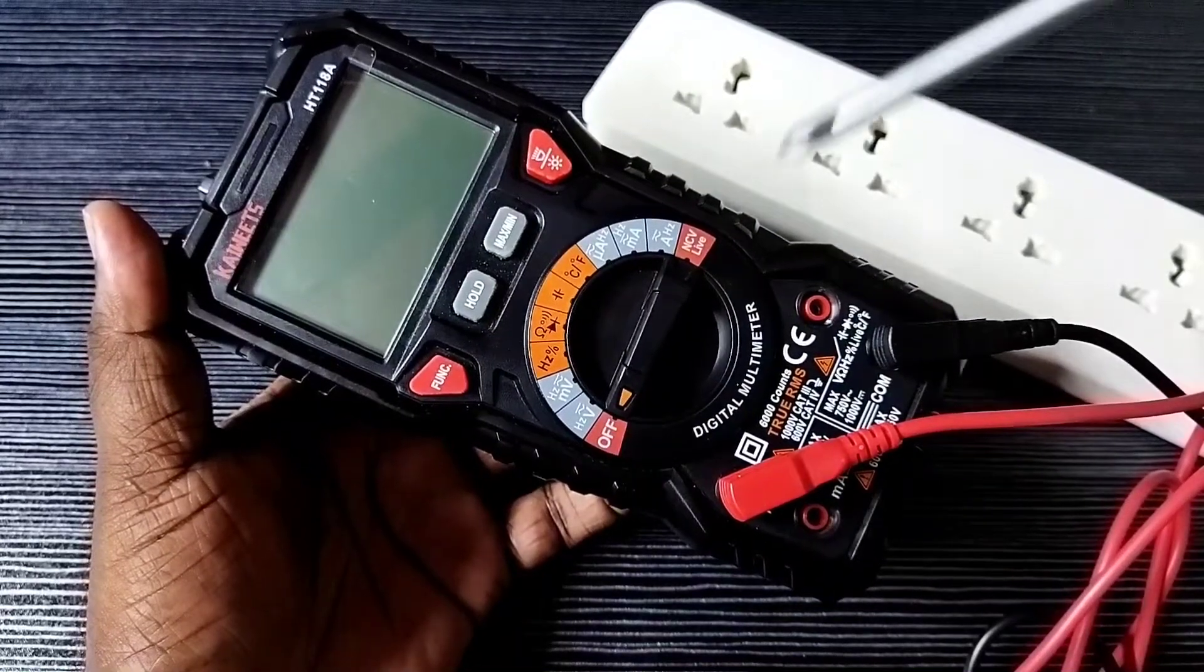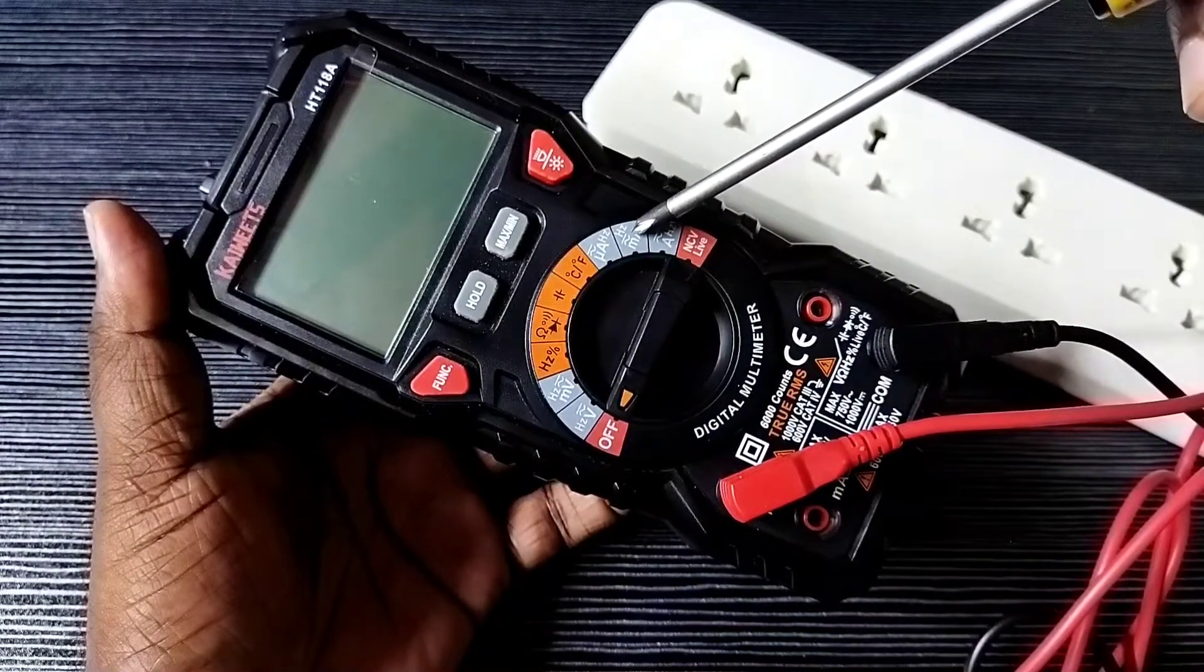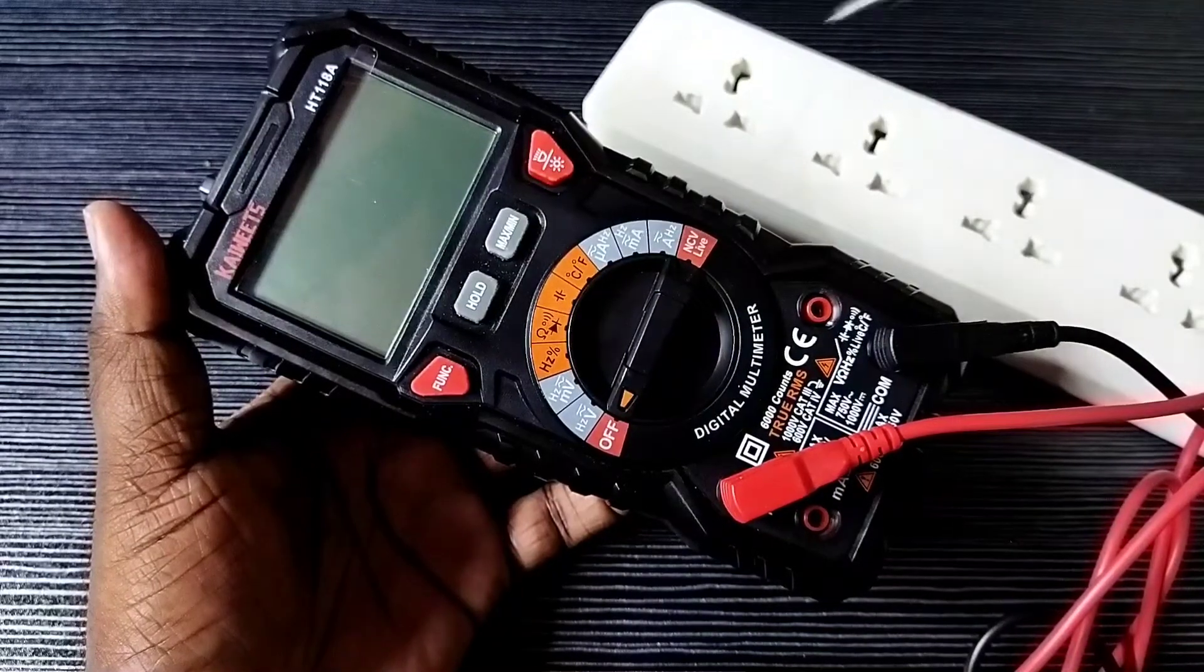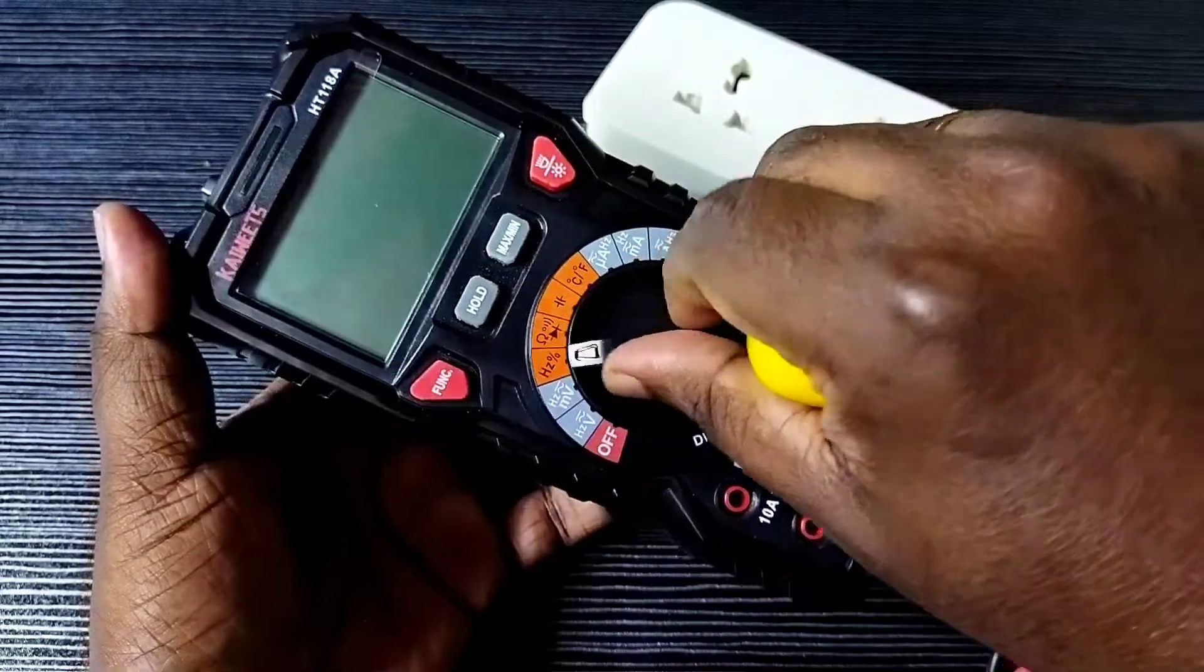Hi friends, this video shows how to measure AC or DC current in microamperes using a Kiwitz digital multimeter. Here you can see the microampere option. Rotate the rotary switch and select the microampere option.